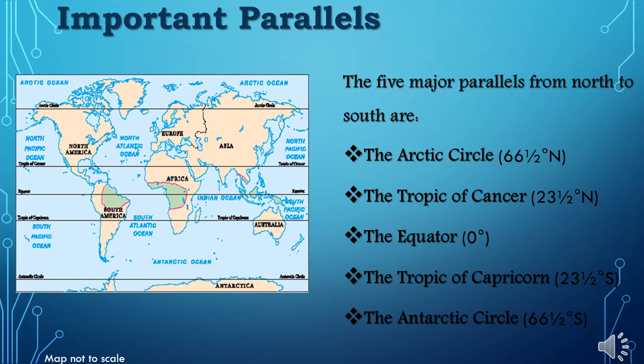Important parallels: The five major parallels from north to south are the Arctic Circle 66.5 degrees north, the Tropic of Cancer 23.5 degrees north, the equator 0 degrees, the Tropic of Capricorn 23.5 degrees south, and the Antarctic Circle 66.5 degrees south.